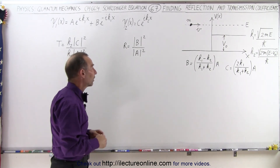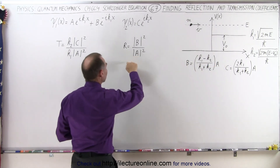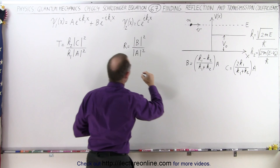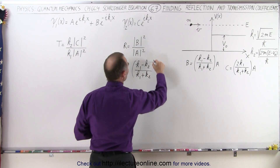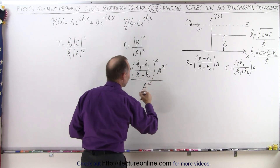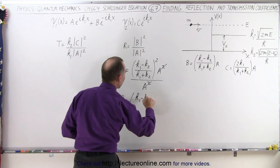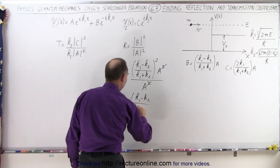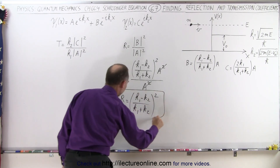Since we found B in terms of A in the previous video, we plug that in. R, the reflection coefficient, is now B squared — which is K1 minus K2 divided by K1 plus K2, quantity squared, times A squared — all divided by A squared. The A squared terms cancel out, so R equals K1 minus K2 divided by K1 plus K2, quantity squared.